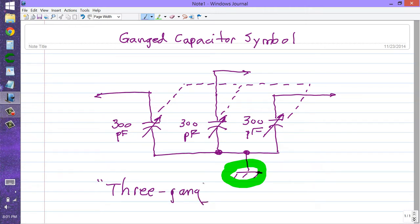Ganged capacitors mean they're mechanically connected to the same shaft, and they turn along with each other, so that you can control multiple circuits.